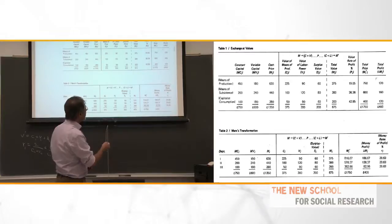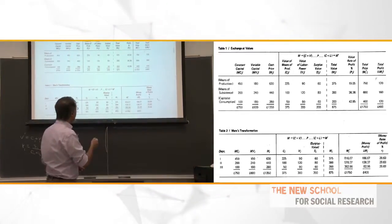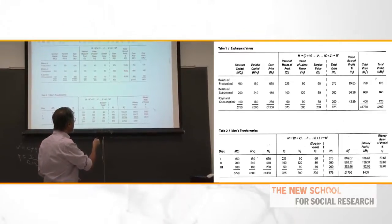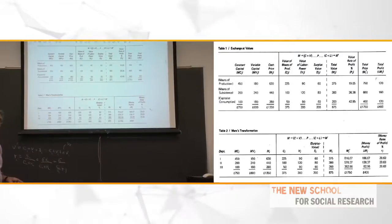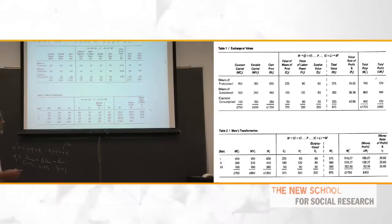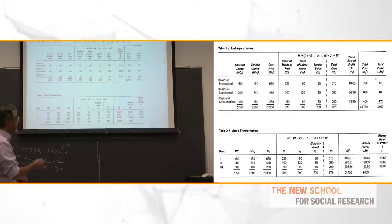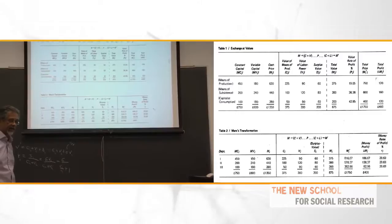The second sector has a profit rate somewhere around the average, so its price will go down a little bit. The third sector's price has to go down a lot. Intuitively, if prices of one sort give you unequal profit rates, then the prices have to change to give you equal profit rates. Marx says the first sector's price goes from $750 to $816.67 — the average profit rate is 29.63%. The second has to go down from $600 to $570, and the third from $400 to $362. That's a straightforward statement that prices have to deviate from labor values in order to equalize profit rates.